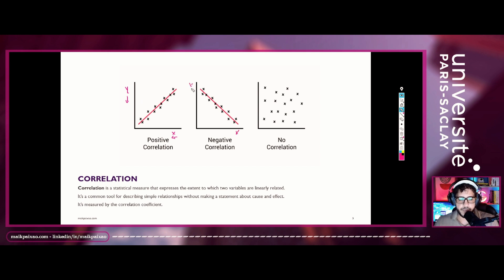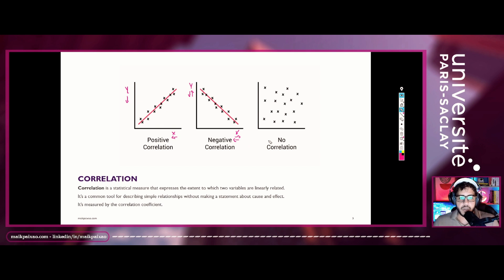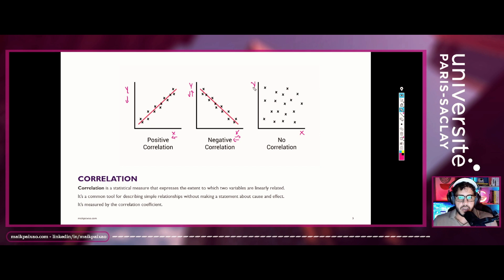We also have negative correlation. In contrast to positive correlation, when x goes up, y goes down, and when y goes up, x goes down. That's a sign we have a negative correlation between two variables. We also have the type where there is no correlation at all — that is when we can't see any linear correlation between the two variables x and y.